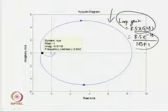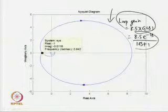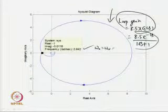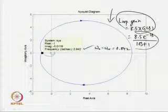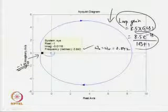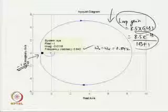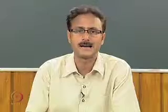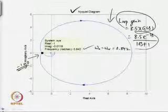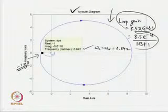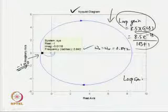From the Nyquist diagram, we get the negative real axis crossing at a critical frequency ω_cr of 0.842 radian per second. The Nyquist diagram shows that the operating point has been pushed to −1 + j0 with the help of the gain controller having a gain of 8.5. We obtain sustained oscillatory output when the loop gain equals −1.